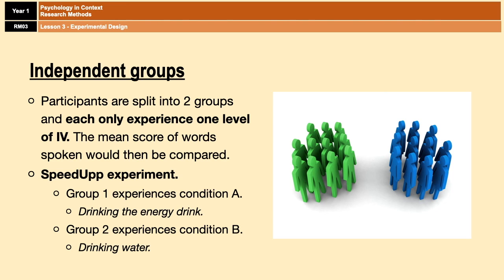Before I move on, just a bit of advice. In an exam, you're often required to identify the experimental design. It helps to have a one-to-two mark definition in your head. The key phrase is: each participant only experiences one level of IV. If you come across a question that says identify the design and explain your answer, you can say it's independent groups because each participant only experiences one level of IV — and that'll get you two marks.